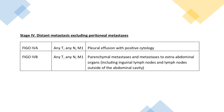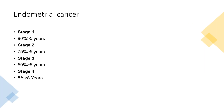Stage 4 is distant metastases excluding peritoneal metastases. 4A is pleural effusion with positive cytology. 4B is parenchymal metastases and metastases to extra-abdominal organs, including inguinal lymph nodes and lymph nodes outside the abdominal cavity. These survival rates are from Cancer Research UK — I would suggest you keep checking their website for updated figures, but they are current as of now.